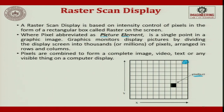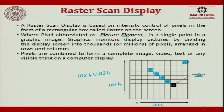The graphics monitor displays pictures by dividing the display screen into several thousands of pixels. Today we talk about 1024 by 1024 — so many pixels will be there. This is one pixel — it is a point. The pixels are combined to form a complete image, video, text, or any visible thing on a computer screen. I have activated certain pixels — I know the x,y coordinates as I told you earlier. What I have drawn is a line — that is what raster scan display is.